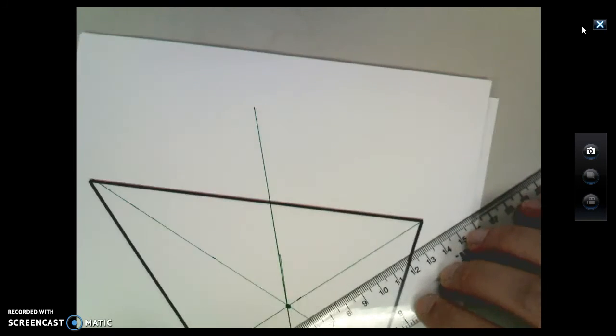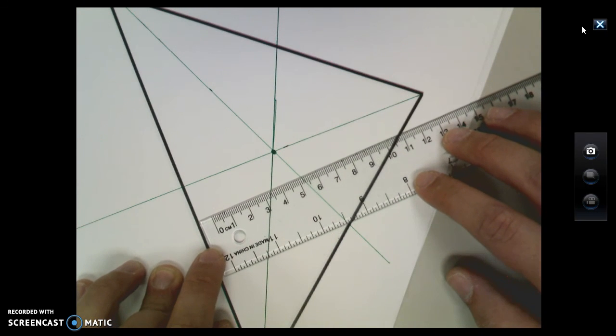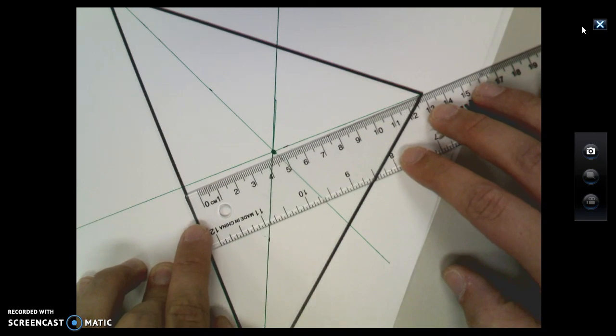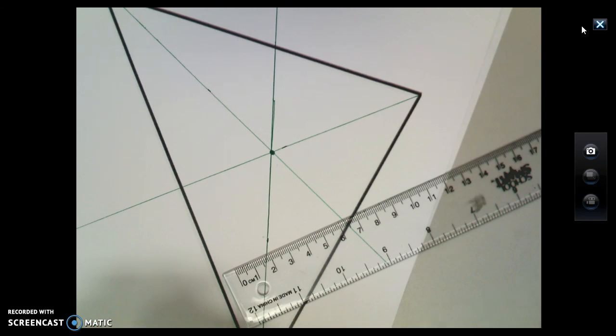Likewise, when I turn it this way, let's take another run here. And it looks to be, again, just short of 5 centimeters. And the same thing will go for the third side. So this, once again, another way to check the accuracy of your angle bisectors.